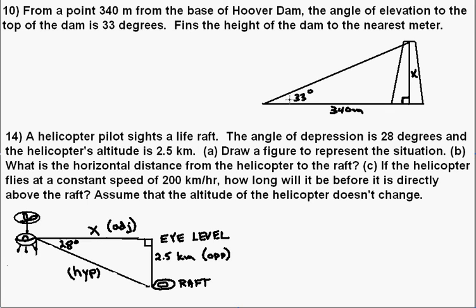All right, number 10. From a point 340 meters from the base of Hoover Dam, the angle of elevation to the top of the dam is 33 degrees. Find the height of the dam to the nearest meter.